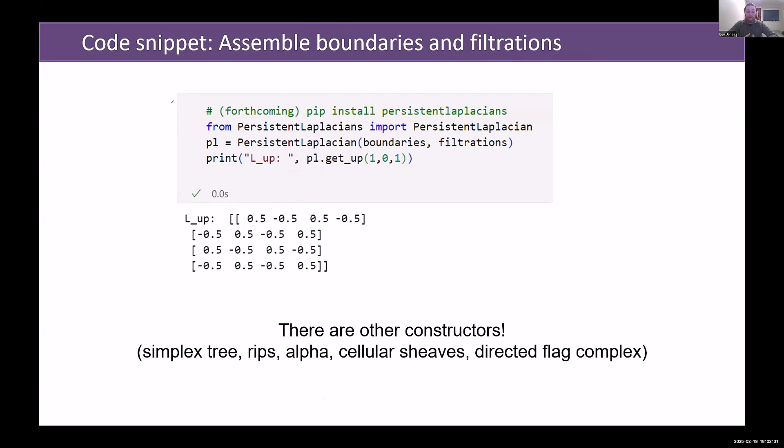Then it's really straightforward to just assemble this into a persistent Laplacian. You package the boundaries and filtrations into a persistent Laplacian object, and then you can get the up Laplacian, the down Laplacian, the Laplacian itself, and the eigenvalues. It only takes a couple lines of code, and you don't just have to give boundary maps. You can give a simplex tree from GUDHI, a Rips complex, Čech complexes with alpha shapes, and directed flag complexes. So it's pretty versatile in what types of data it can handle and the algorithms it can use.